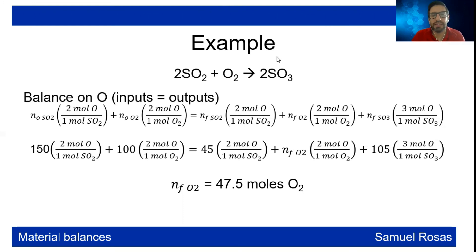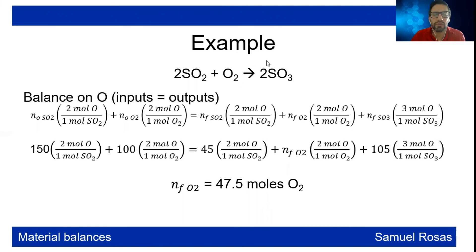So these are the two methods — extent of reaction and atomic balance — that we can use to perform material balances for systems with a single reaction. Later on we will discuss multiple reactions. Thank you very much.